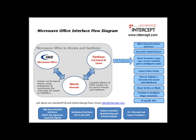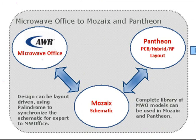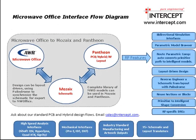For environments utilizing the Microwave Office interface, it's important to understand the user flow options. The interface is a bidirectional data flow to and from AWR's Microwave Office and Intercept's Mosaic Schematic. This means that data can be sent to or from Microwave Office either in full or in part, which makes this interface as flexible as the design environment needs it to be.